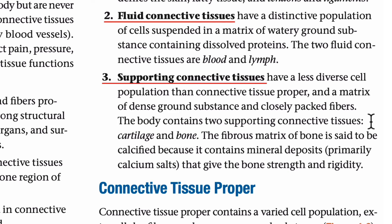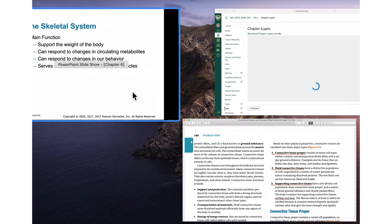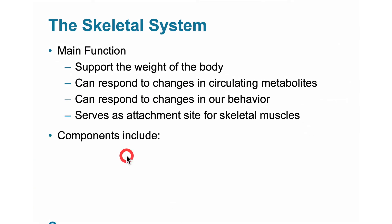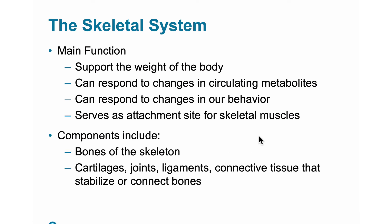The body contains two supporting connective tissues: cartilage and bone. The fibrous matrix of bone is said to be calcified because it contains mineral deposits, primarily calcium salts, that give the bone strength and rigidity. Finally, the skeletal system includes not only the bones of the skeleton, but also the cartilages, joints, ligaments, and other connective tissues that stabilize or connect the bones. Join me in Module 6.1 as we turn our attention to the five major functions of the skeletal system.